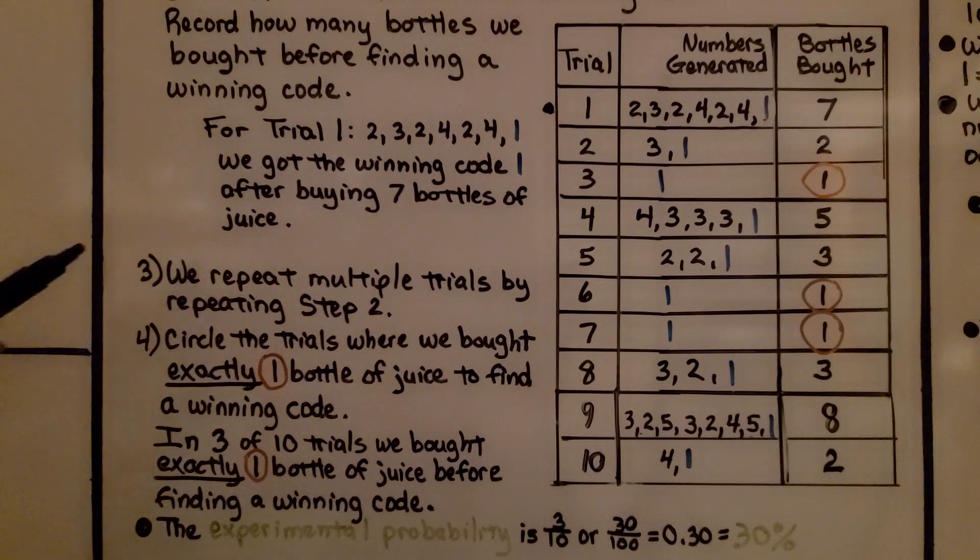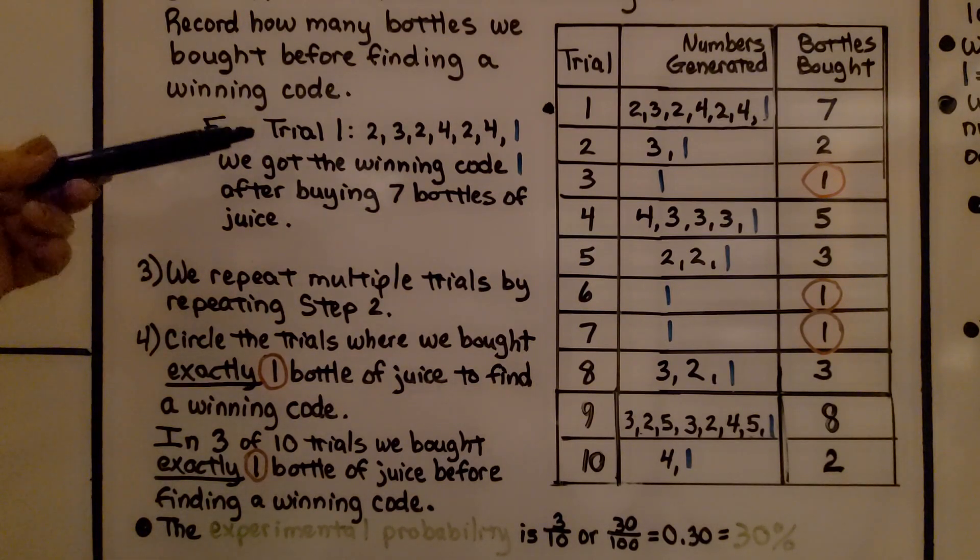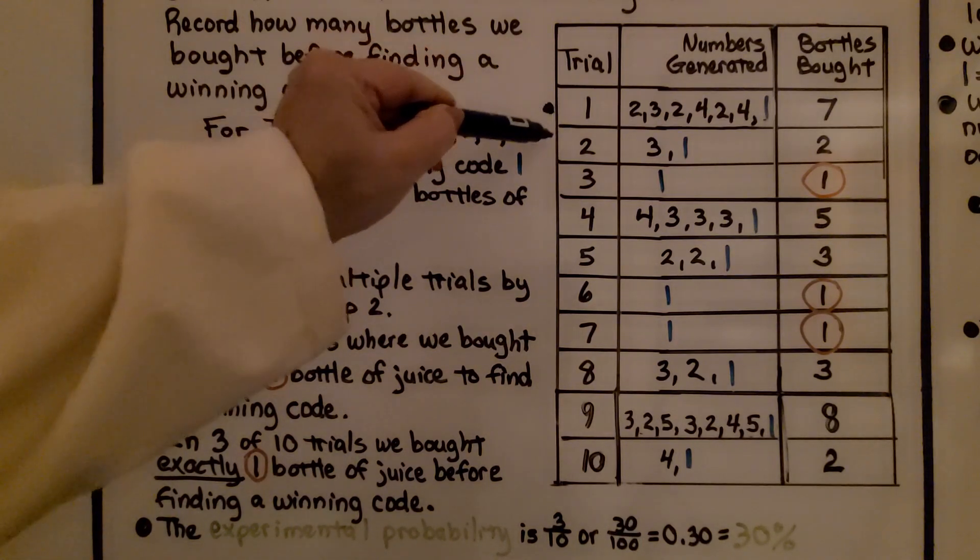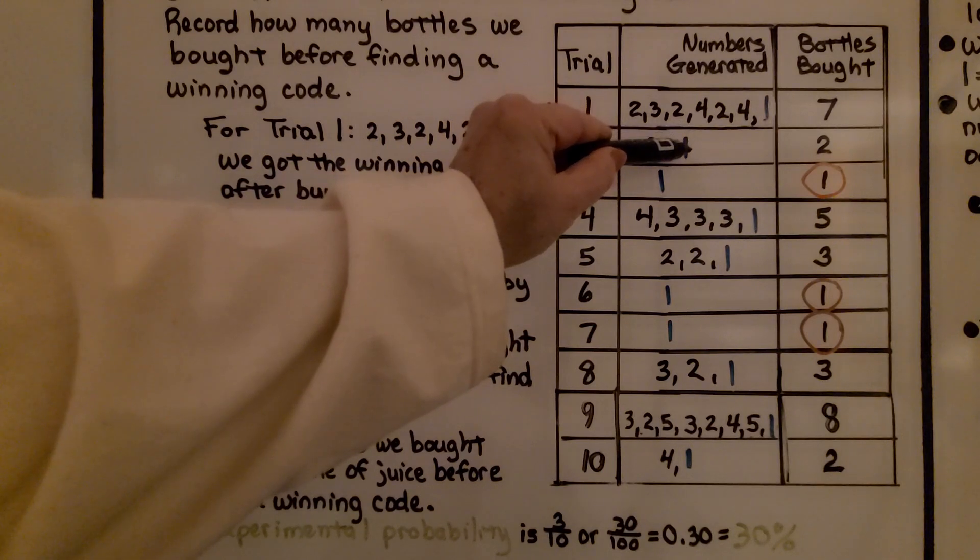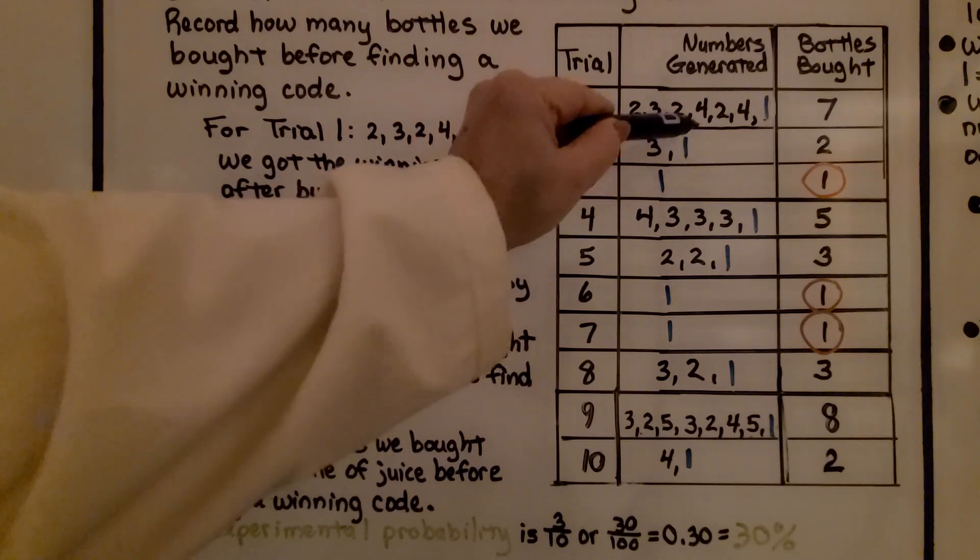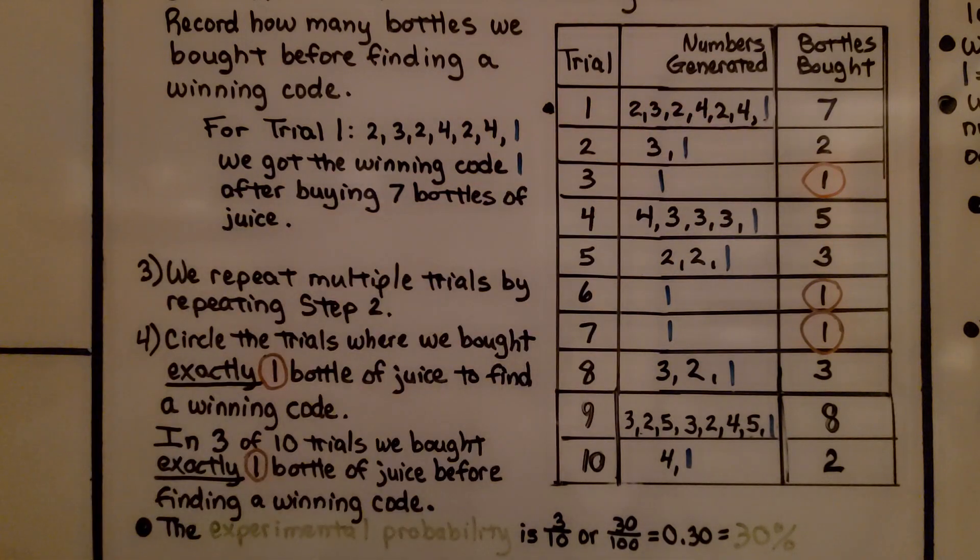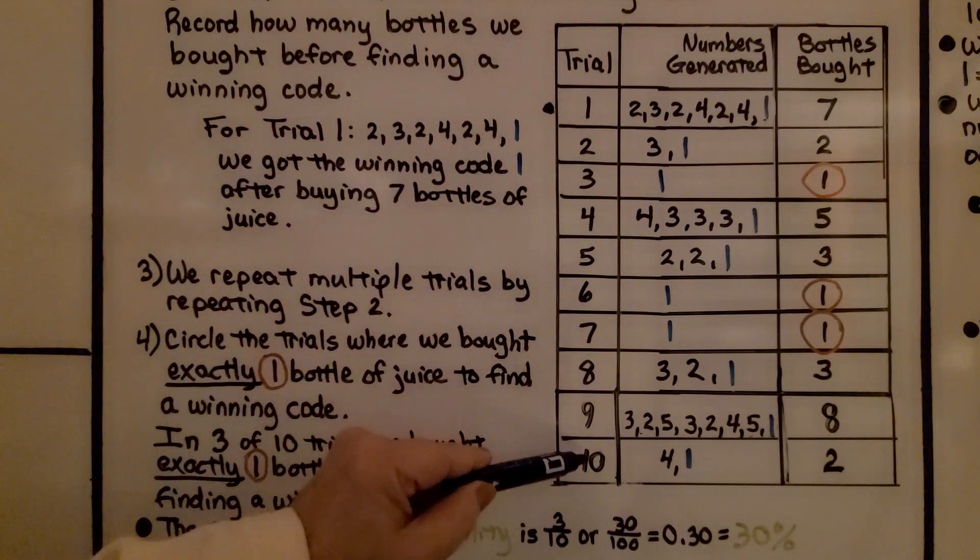The next thing we do is repeat multiple trials by repeating step 2. And for step 2, we generate random numbers, and I got a 3 and then a 1. So whenever I got the 1, I stopped. That means that's 2 bottles that we would have had to have purchased before getting a winning one. And I did it for 10 trials.